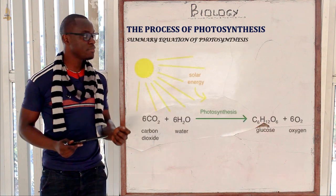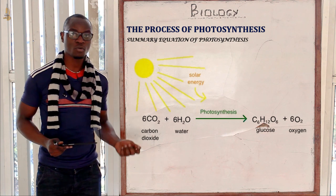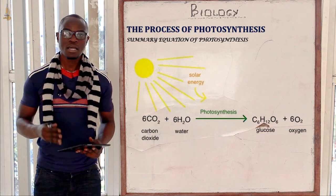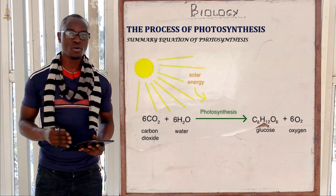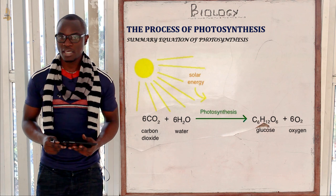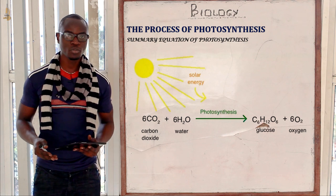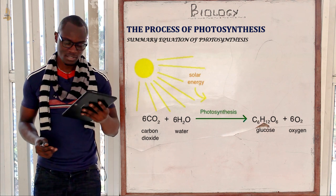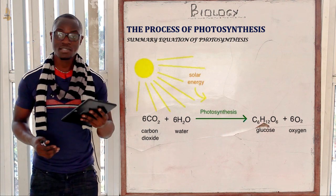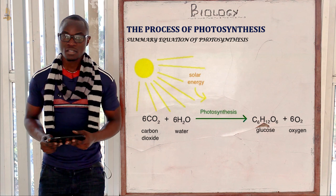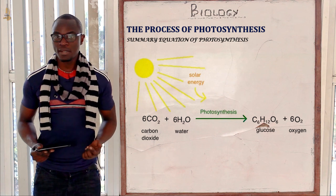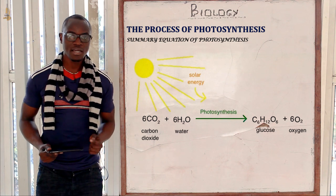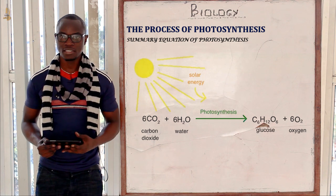Photosynthesis may be summarized by the equation whereby we react carbon dioxide with water, then we get simple sugar or glucose plus oxygen. For this process to take place there must be chlorophyll and there must be light.